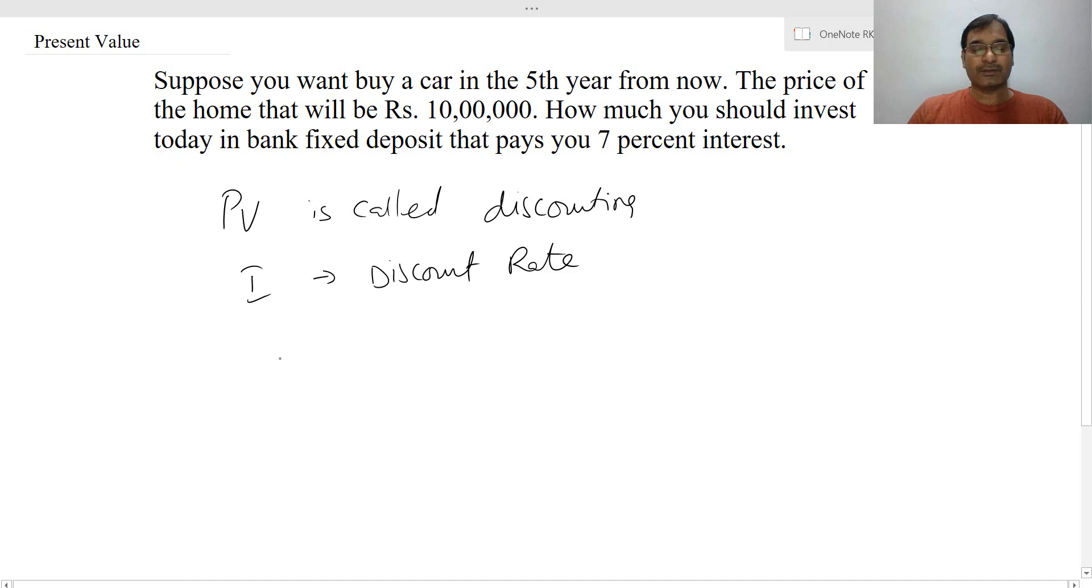So the formula that we use to calculate the present value is: PV = FV / (1+i)^n. This part (1+i)^n is called the present value factor, and this is your future value. Now here you have an example.